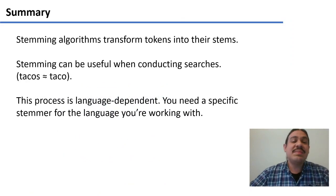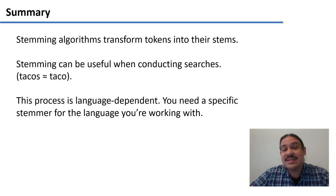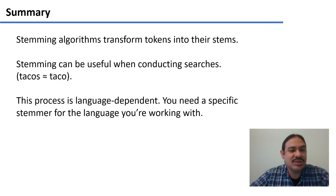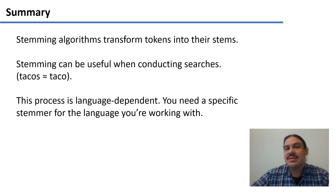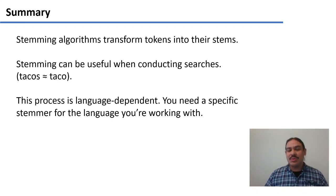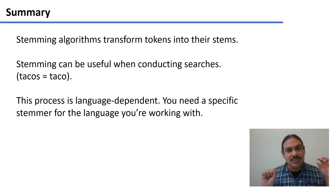In summary, stemming transforms tokens into their stems. This is useful when conducting searches so the computer can identify that 'tacos' and 'taco' are related. This process is language dependent — I chose English alternatives here, but you need a specific stemmer for the language you're working with. The process can be very complex; imagine what a stemming algorithm would look like in Arabic, where it needs to figure out root consonants and remove vowels. If you're working with a small language, you may not be able to perform stemming at all.